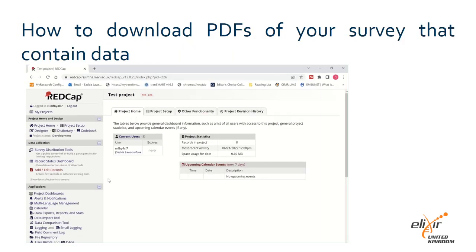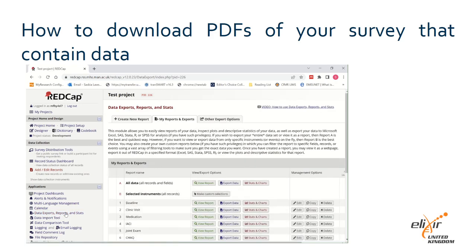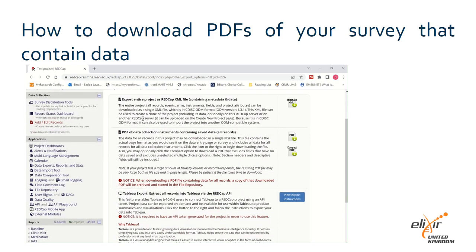There is also an option to download PDF versions of your surveys that include data. Go to data exports, reports and stats in the left hand menu and click on the other export options tab. In the second box down, click on either the PDF or the compact PDF icon to download PDFs of your surveys including all saved data for all records in your project.